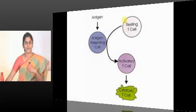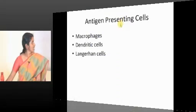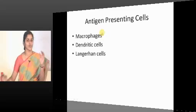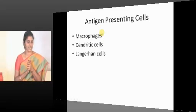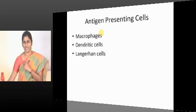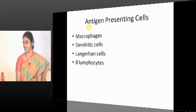Antigen presenting cells not only present the antigen, they also perform the most important function of activating the master T cells. These antigen presenting cells, as you all know, are macrophages, Langerhans cells, and dendritic cells — of these three, dendritic cells are the most professional ones. Surprisingly, B lymphocytes also come into this category.